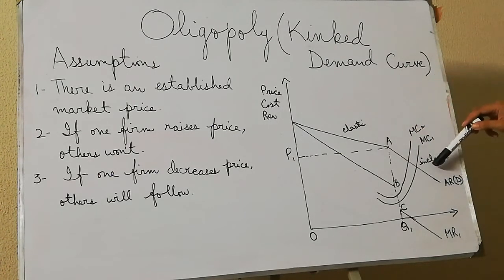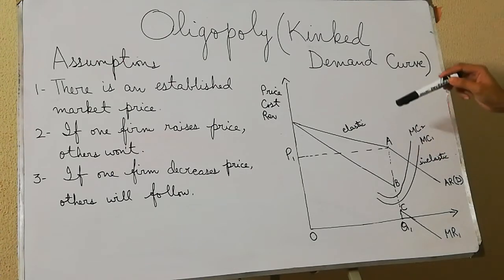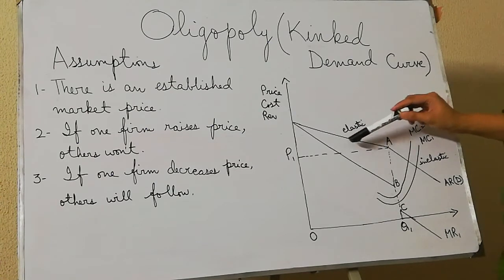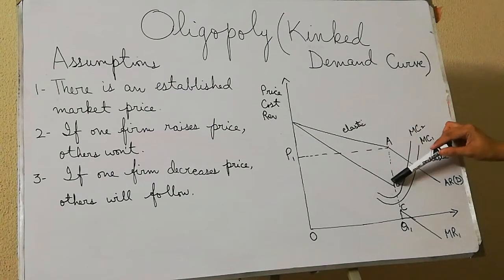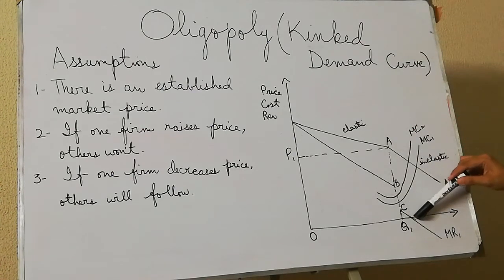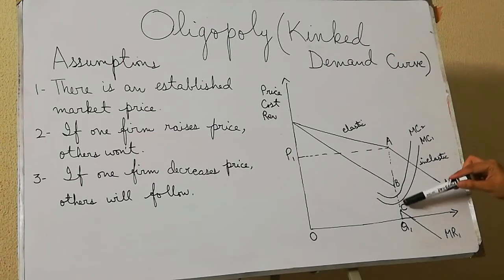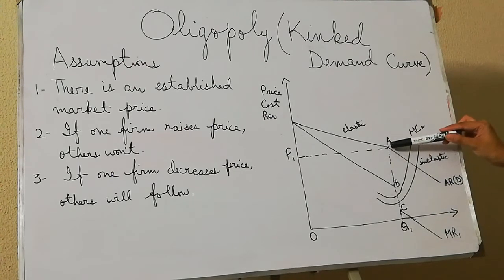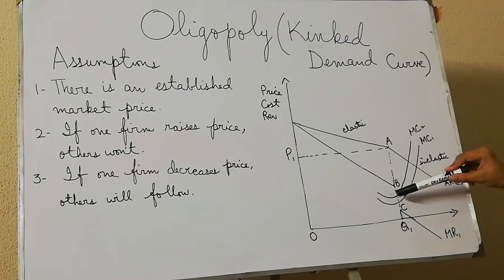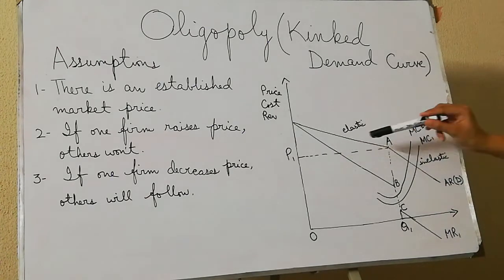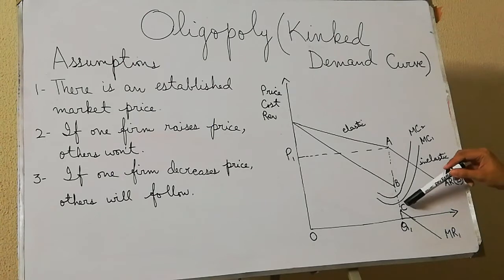Because of these two types of demand curves, we have two different marginal revenue curves — one associated with the elastic demand curve and the other with the inelastic demand curve. You can see the discontinuity in the marginal revenue curve from point B to point C, and this corresponds to the exact point where we have the kink in the demand curve.